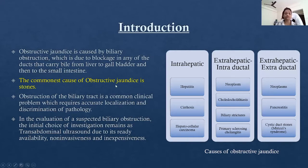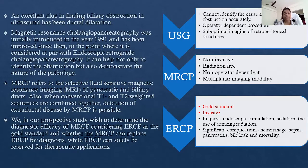The commonest cause of obstructive jaundice is stones. Obstruction of the biliary tract is a common clinical problem which requires accurate localization and discrimination of the pathology. In the evaluation of suspected biliary obstruction, the initial choice of investigation remains transabdominal ultrasound due to its ready availability, non-invasiveness, and inexpensiveness. However, ultrasound cannot identify the cause and level of the obstruction accurately, as it is an operator-dependent procedure and there may be suboptimal imaging of retroperitoneal structures due to overlying bowel gases.